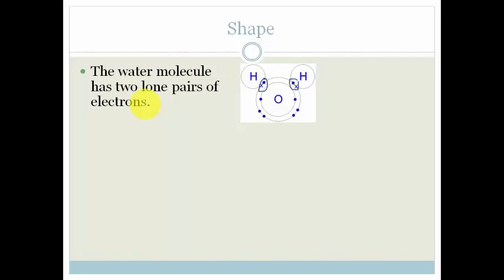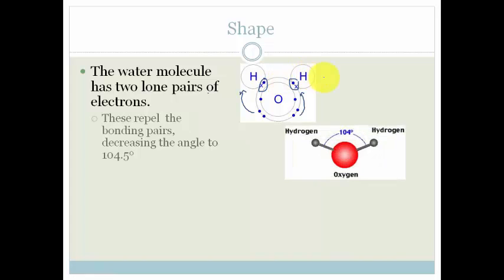And what's special about these is that these repel the bonding pairs. So what happens is that these will repel the bonding pairs, which is why we end up with this little Mickey Mouse type shape. And what happens is that this angle between the bonding pairs is decreased to 104.5 degrees.